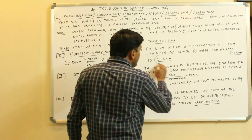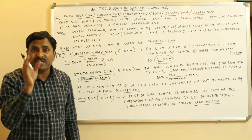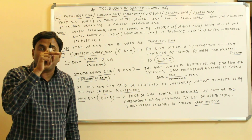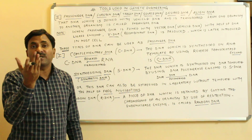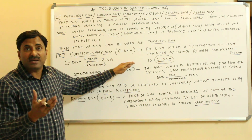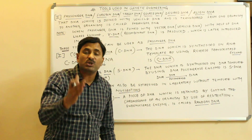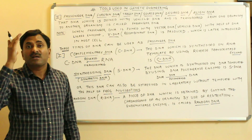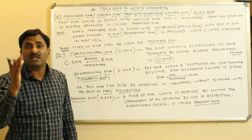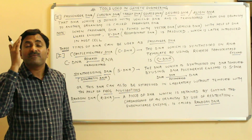We know that when RNA is formed from DNA, the process is called transcription — the template is DNA. But here the case is different. There is a process called reverse transcription, which is opposite to transcription, where DNA is synthesized on an RNA template by the use of the reverse transcriptase enzyme.